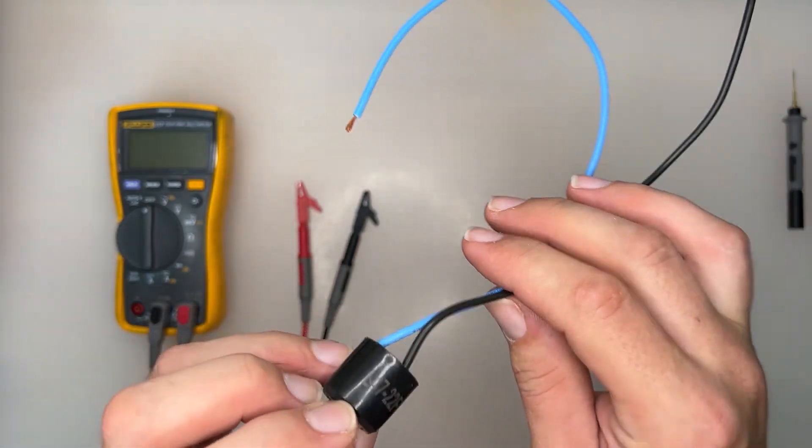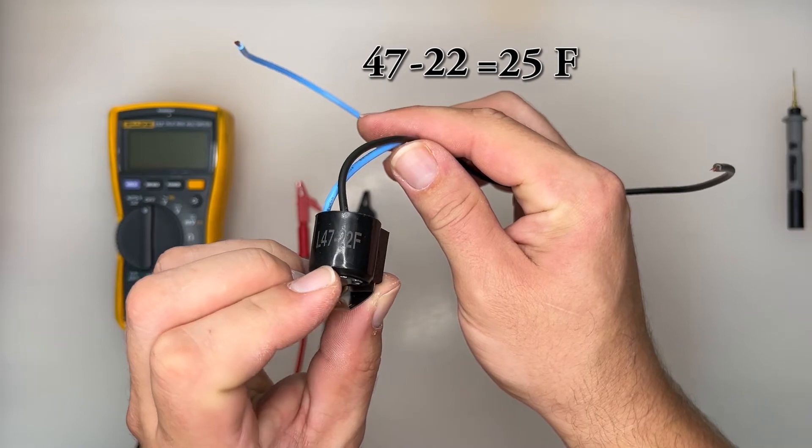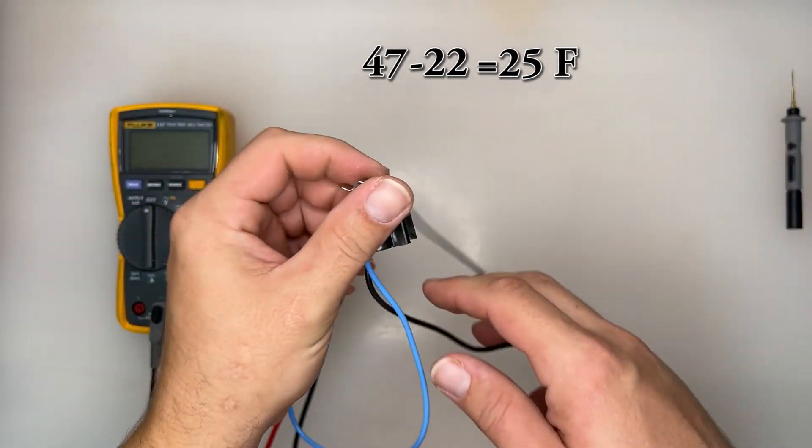Follow closely. Limit temperature of 47 is when the thermostat opens. Minus 22 equals 25 Fahrenheit. That is when the thermostat closes.